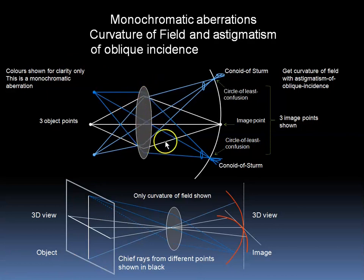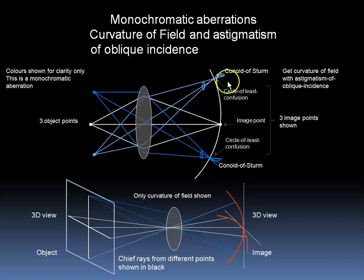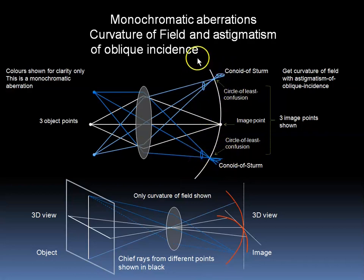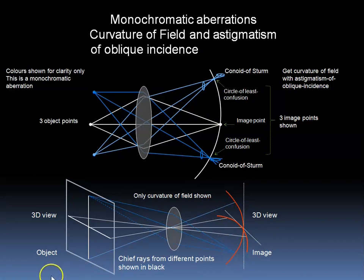Because oblique rays undergo more refraction than paraxial rays, the image is brought closer to the lens. In addition, the off-axis points undergo astigmatic refraction and create little conoids of Sturm, as shown here. So there are both little conoids and also curvature of field occurring at the same time. Here we show only the curvature of field that occurs in a lens — in other words, the image would be most clear on a surface that is somewhat curved rather than on a flat screen.